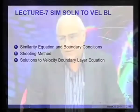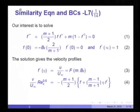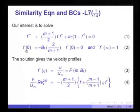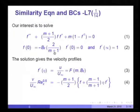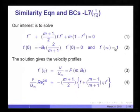In this lecture, I will also present some solutions to the velocity boundary layer equation. Our interest is to solve this third order ordinary differential equation with the boundary condition f(0) equal to b_f times 2 over m plus 1, which is the blowing parameter. f'(0) equals 0 is the no-slip condition, and f'(∞) equals 1 is the far-field boundary condition.